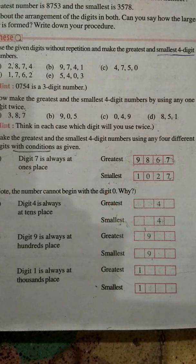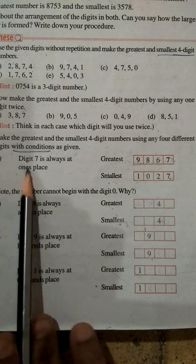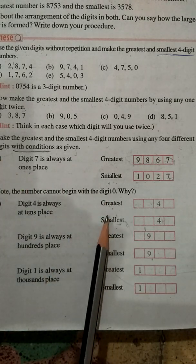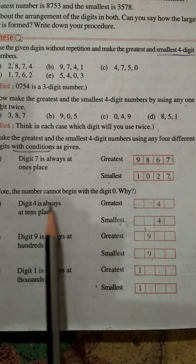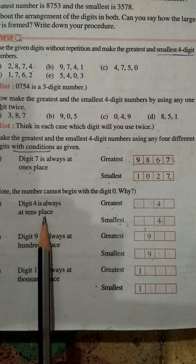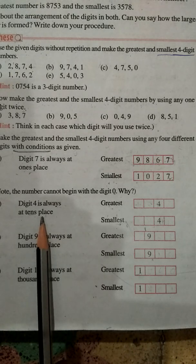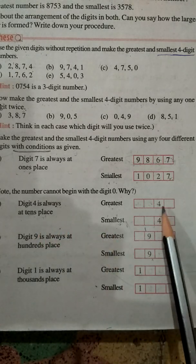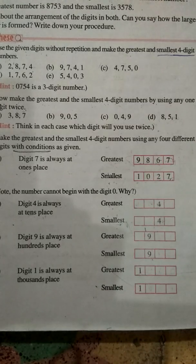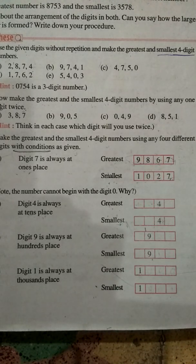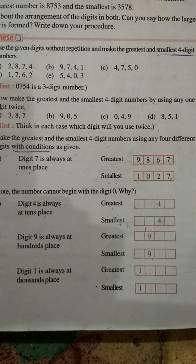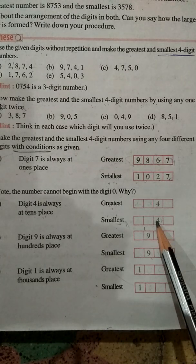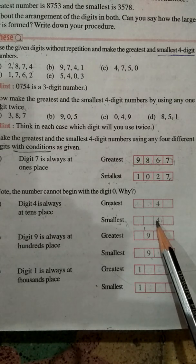With the condition means: see here the digit 4 is always at the 10s place. This means we have to keep 4 at the 10s place only, and take the greatest digits to form the greatest number. Again, keeping 4 at the 10s place, you take the smallest digits to make the smallest number.